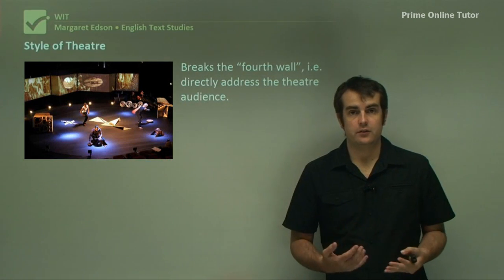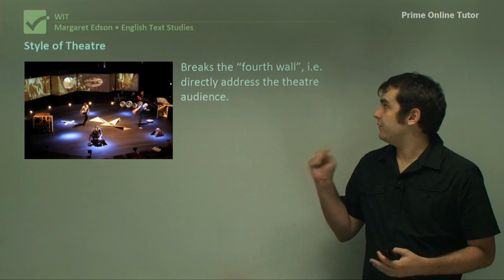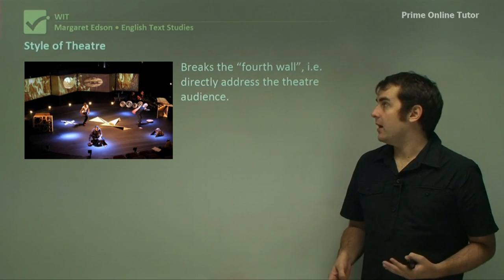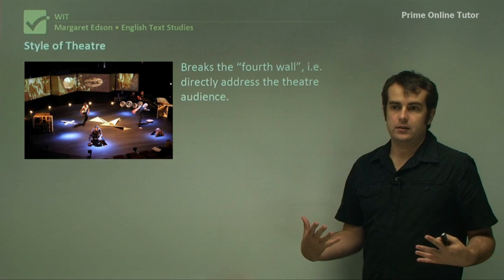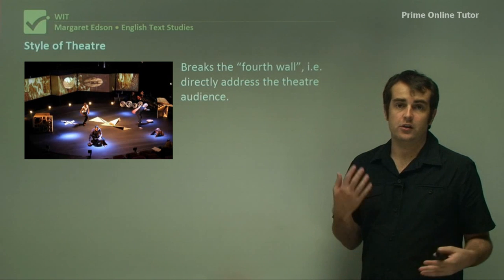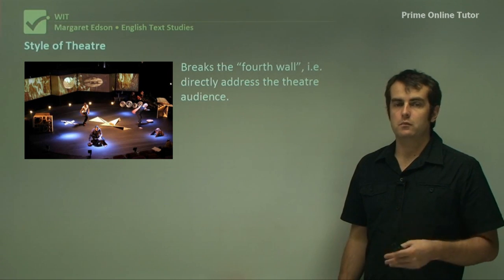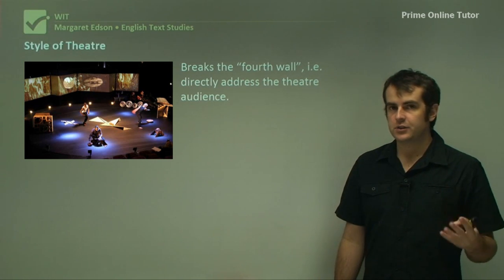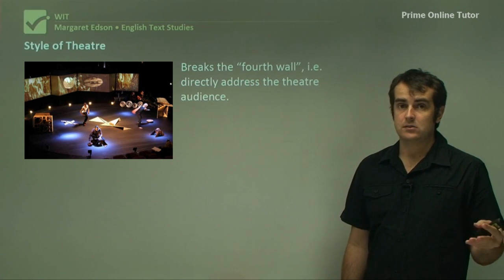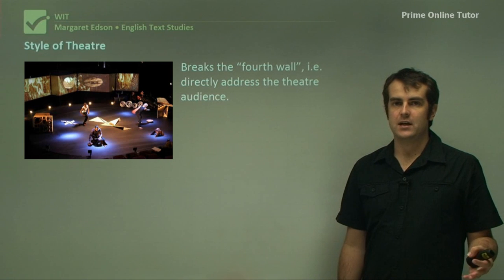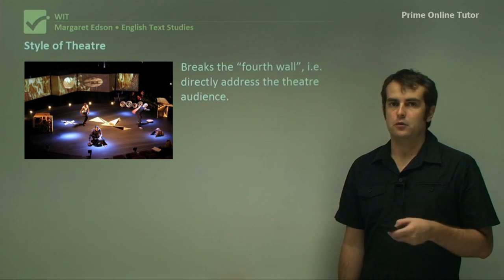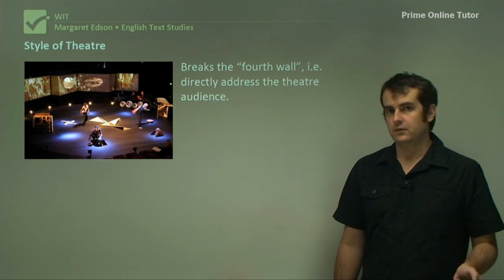Let's look at the style of theatre being used in this play. One of the main techniques is that it breaks the fourth wall — it delivers monologues which directly address the audience. In doing so, it's a technique indicative of postmodernism, one that attempts to establish an emotional connection particularly between the protagonist and the audience. Because of the nature of the protagonist — someone quite deeply unlikable from the outside looking in — we get a softer, more human approach through this delivery than we would otherwise.